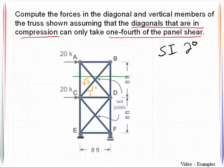That is to say that there's going to be a certain amount of shear present in this panel and we are saying that one of those members will take a fourth of it, one of the diagonal members will take three-fourths of it.